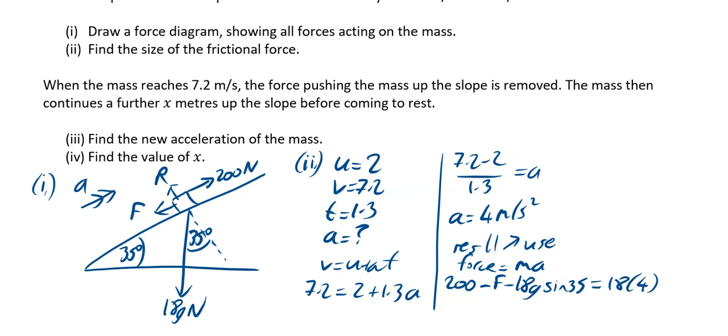Now we've got a good bit of working out to do, but you can say your 200 minus 18g sine 35 minus the 18 times the 4 will work out to be your f. And then you can work out your f to be, to 2 decimal places, 24.76 newtons, to 2 decimal places, and that's it.